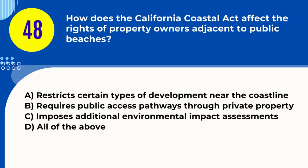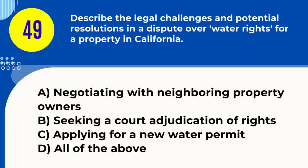Question 48. How does the California Coastal Act affect the rights of property owners adjacent to public beaches? A. Restricts certain types of development near the coastline B. Requires public access pathways through private property C. Imposes additional environmental impact assessments D. All of the above. Answer: D. All of the above. Explanation: The California Coastal Act restricts coastal development, may require public access through private property, and imposes environmental assessments.